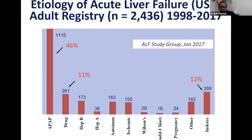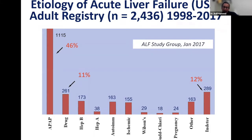This is data from the U.S. registry. For the past 20 years, we collected data from adult liver transplant centers in the Acute Liver Failure Network. From 1998 to 2017, close to 2,500 patients were enrolled. The most common cause was acetaminophen — also called APAP — at 46%. Drug-induced liver injury was 11%. Hepatitis B, hepatitis A, and other causes were rare, and indeterminate causes were 12%.